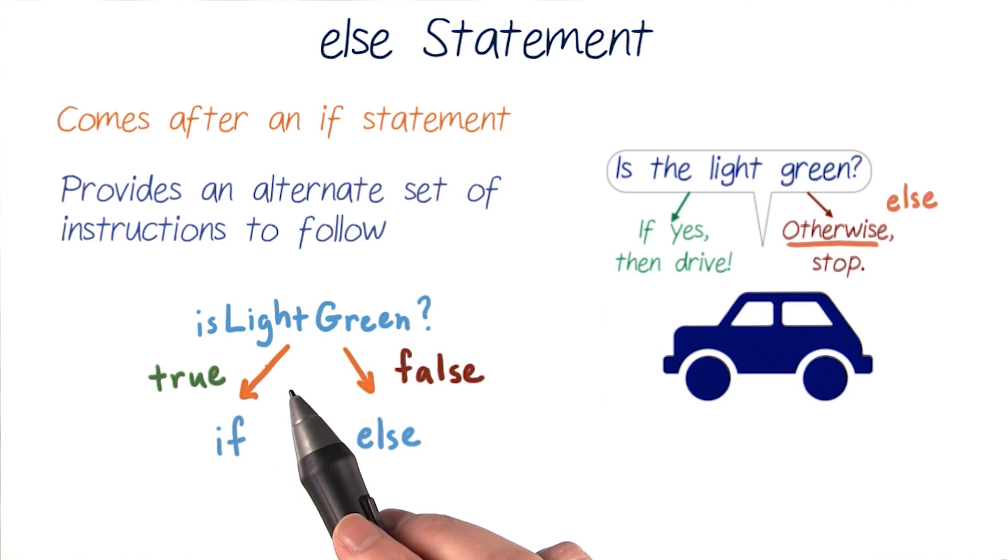So based on the value of our boolean variable isLightGreen, our computer will make a decision to execute code contained in the if statement when isLightGreen is true, or in the else statement when isLightGreen is false. It will never execute both blocks of code.